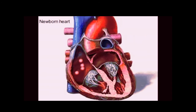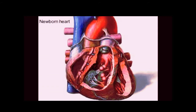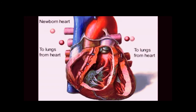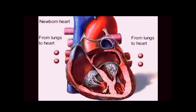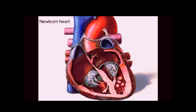The pathway of blood in the newborn heart works like this. Oxygen-poor blood from the body enters the right atrium, then goes to the right ventricle. From the right ventricle, the blood is pumped to the lungs, where it becomes oxygen-rich. Then the blood flows back to the heart, filling the left atrium, and from there on to the left ventricle. The left ventricle pumps the oxygen-rich blood through the aorta, which carries it to the rest of the newborn's body.